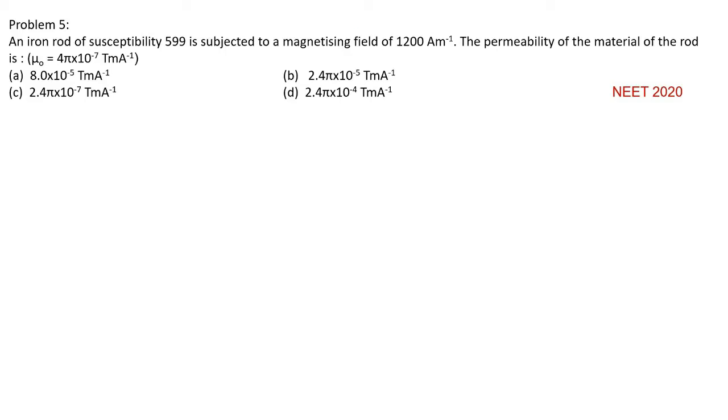Problem number 5. An iron rod of susceptibility 599 is subjected to a magnetizing field of 1200 Ampere per meter. The permeability of the material of the rod is,